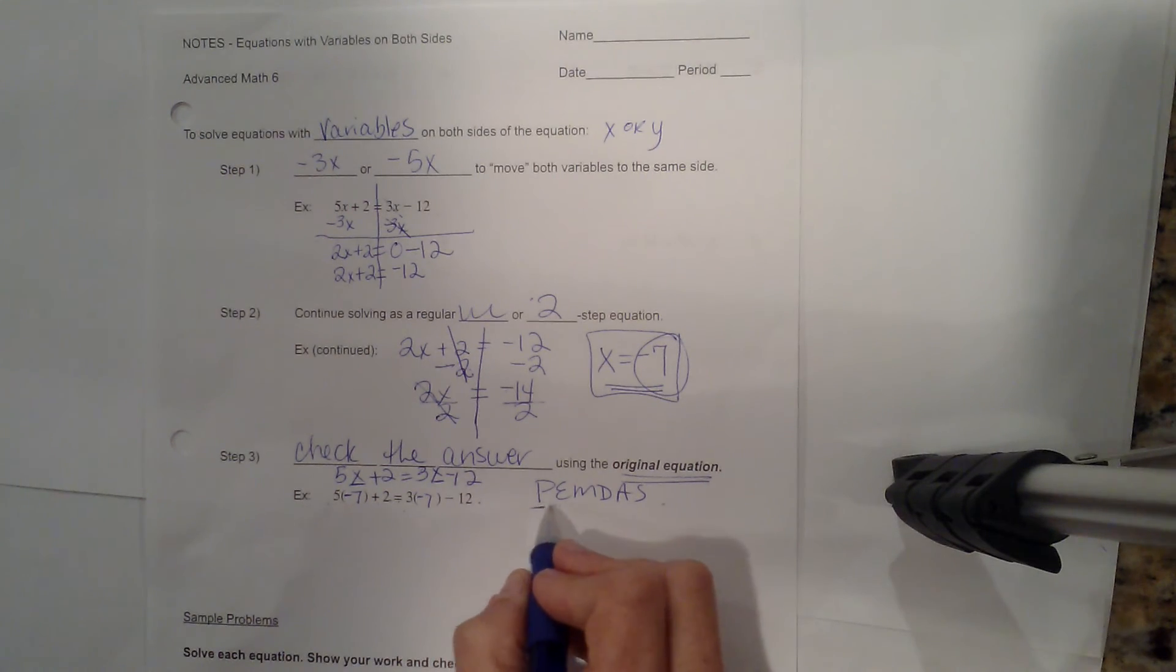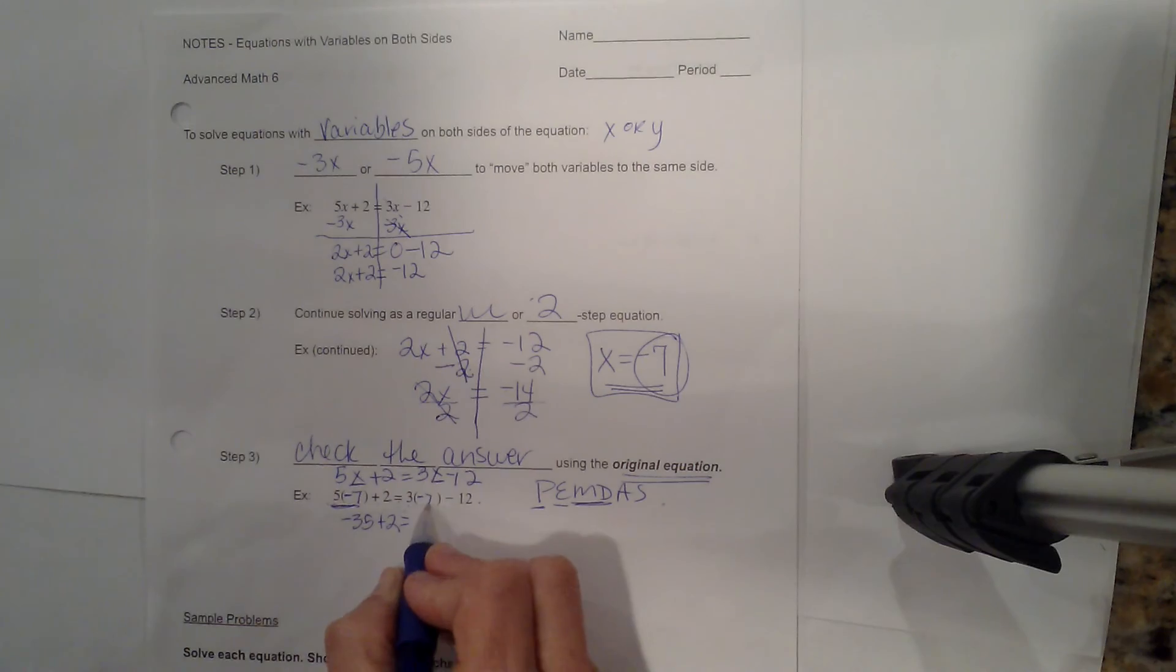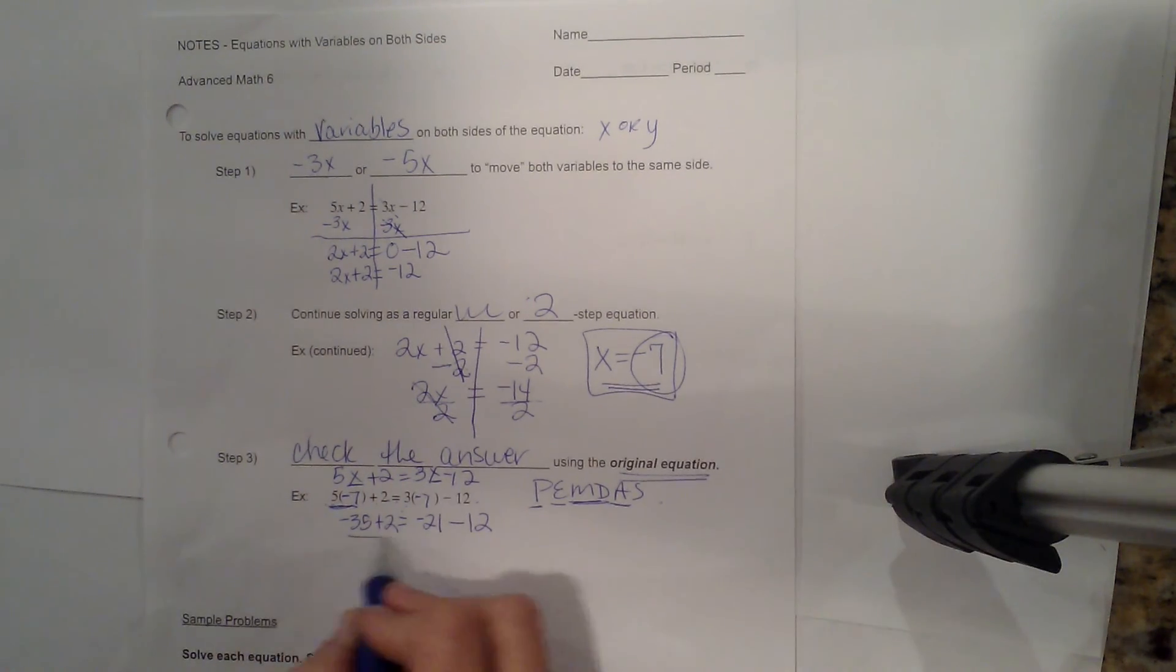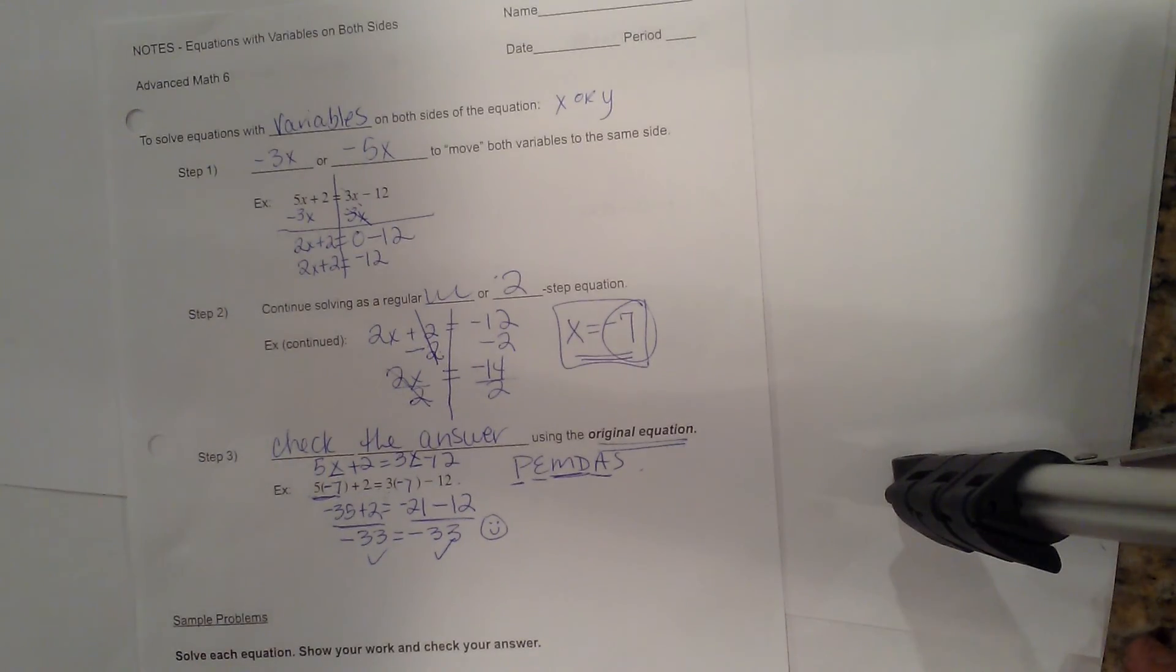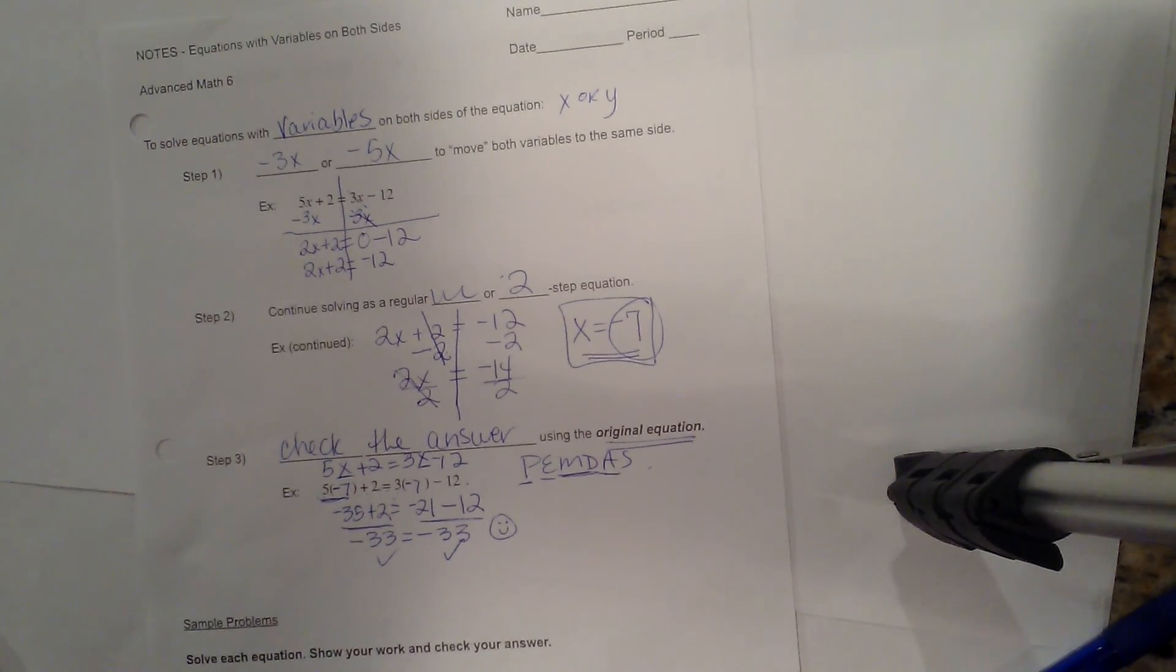I have to do parentheses first, then exponents, then multiply and divide. So let's multiply and divide left to right. So I have 5 times negative 7 is negative 35. Bring down my positive 2 equals 3 times negative 7 is negative 21. Bring down this minus 12. Now I want to add and subtract where I can. I can add these together and subtract these. So that's going to be negative 33 and this is going to give me negative 33. And that is true. So I know I have done this correctly. And that's how you can check your work to make sure you've solved the equation correctly. That's how you do an equation with variables on both sides.